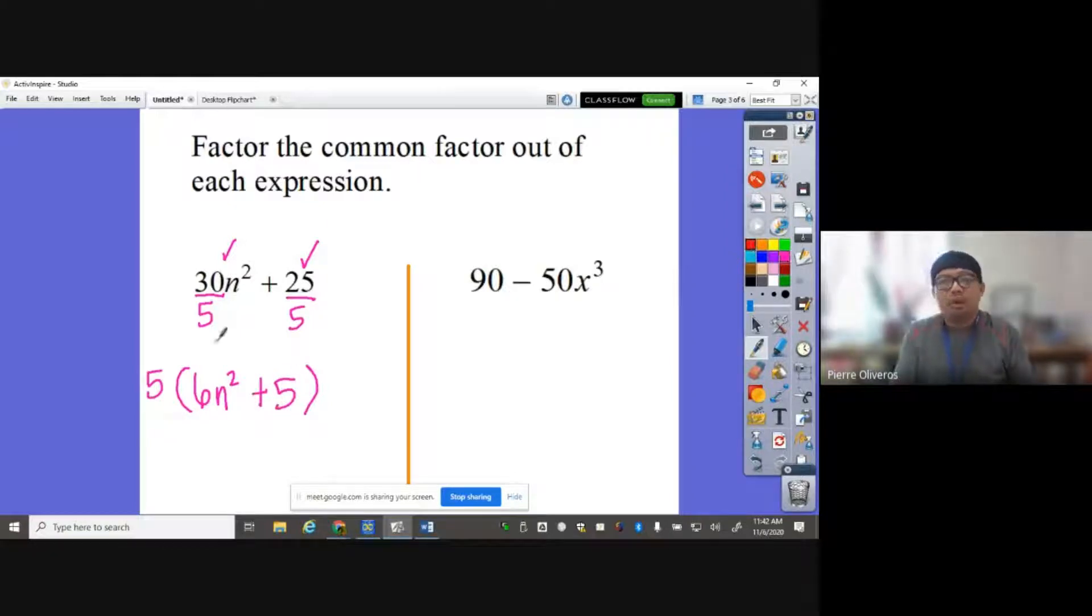For you to know if your answer is correct, you will distribute the 5 here. If you distribute the 5 to the 6, you will get 30n squared. If you distribute the 5 to the 5, you get 25. And that's the original question. So therefore, this is the correct answer.